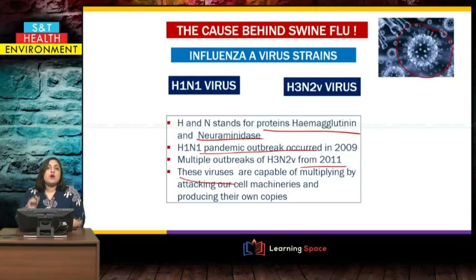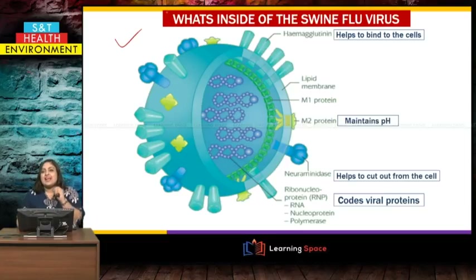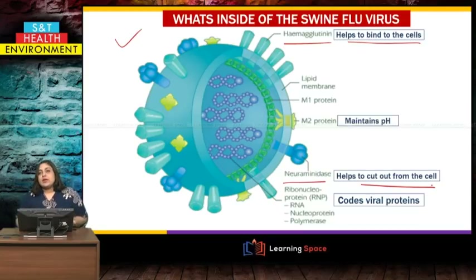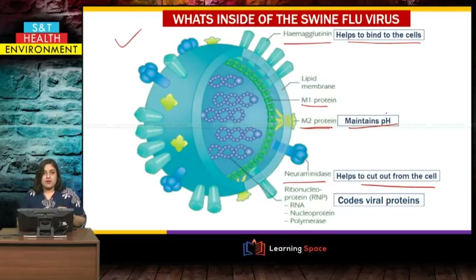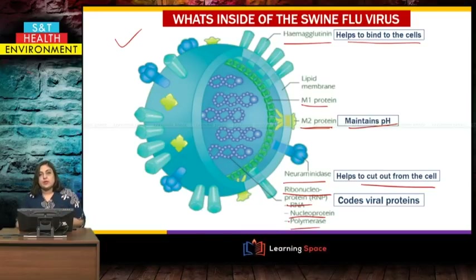We will now look at the structure of the H1N1 virus. Inside the swine flu virus, hemagglutinin helps to bind to the host cell, while neuraminidase helps the virus cut out from the host cell. There is also the M1 and M2 protein — M2 functions to maintain the pH level of the virus and the cell. The genetic material is called RNA nucleoprotein and nucleoprotein polymerase, which code for the viral proteins — they are the blueprint for making more swine flu virus.